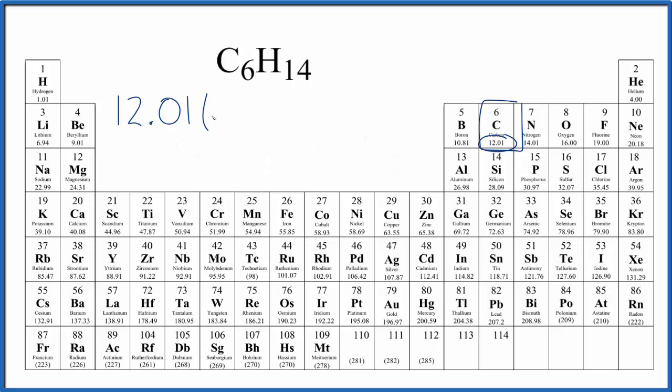We have six carbon atoms, so we multiply this by six. For hydrogen, 1.01 grams per mole, and we have 14 hydrogen atoms, so we multiply that by 14.